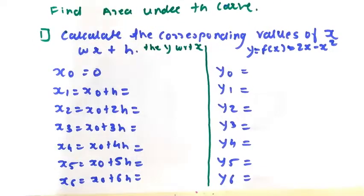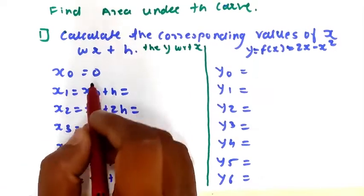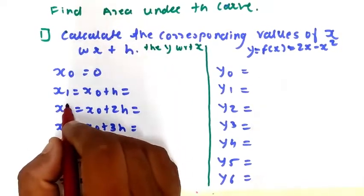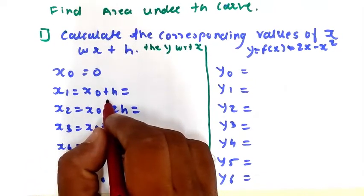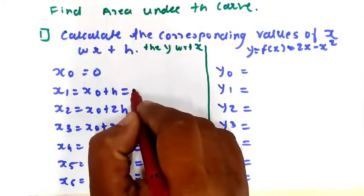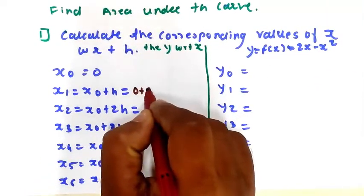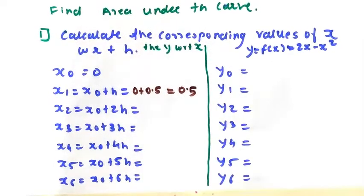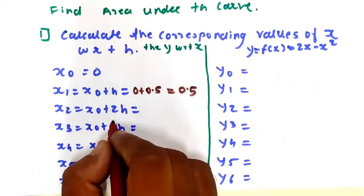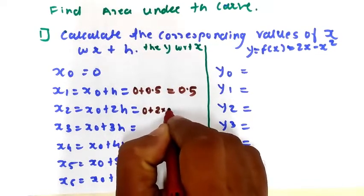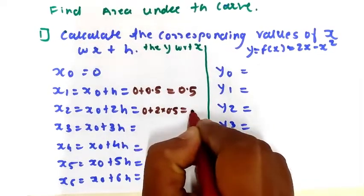x0 is 0, which is already given. x1 = x0 + h = 0 + 0.5 = 0.5. x2 = x0 + 2h = 0 + 2×0.5 = 1.